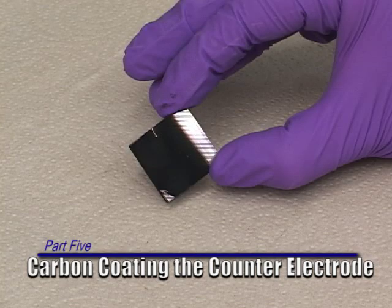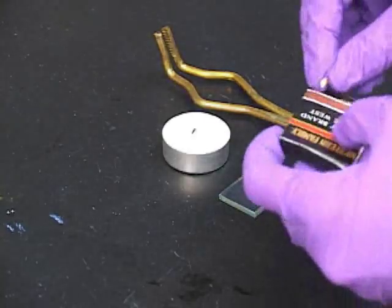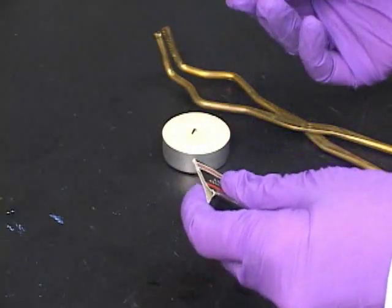Part 5. Carbon Coating the Counter Electrode. Step 1. While the titanium dioxide electrode is being stained in the berry juice, make the counter electrode from another piece of conductive glass.